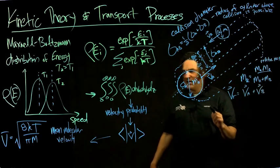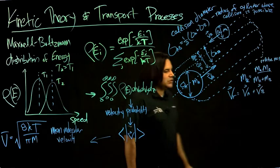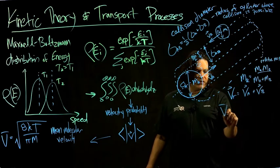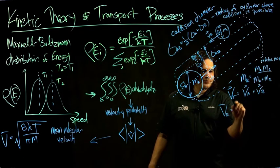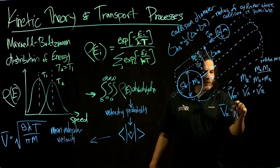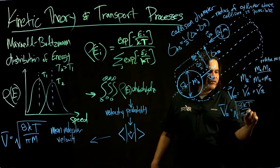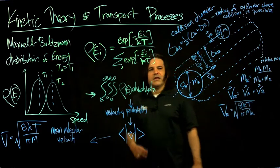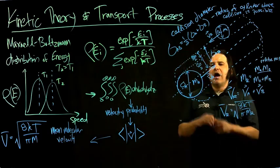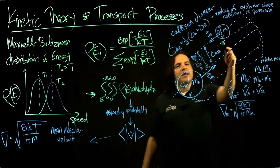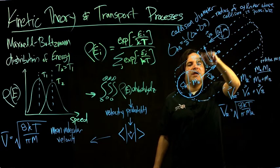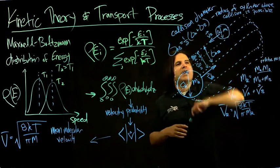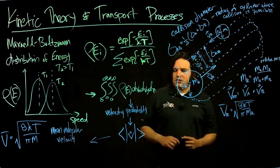Now we can start to answer: how fast do they collide? How fast they collide depends on how many of A and how many of B are in this fluid, on the volume of their collision volume—which is related to the collision diameter—and on how fast they're moving.